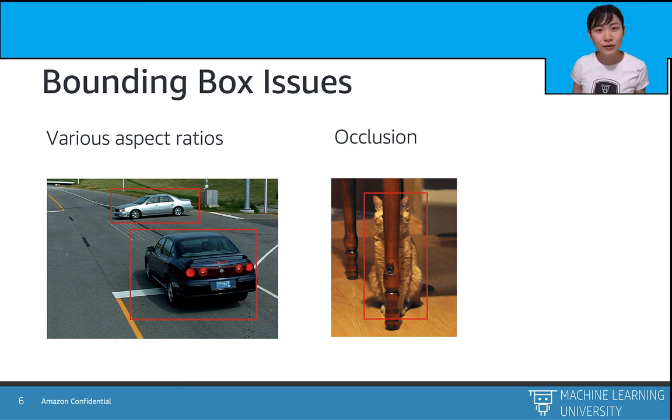So what is the anchor box? Let's take a look at the example here. For a given object, rather than only predict one box, we can predict multiple objects.